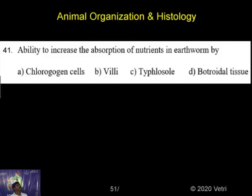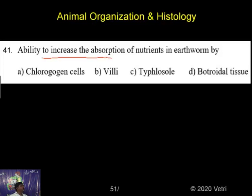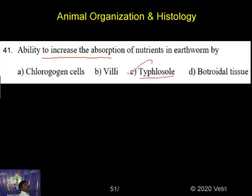Ability to increase the absorption of nutrition into the epithelium. Collagen cells are absorbed, or villi cells, typicosol, and posterior tissue. It's a very easy question: who is the absorber of the nutrition? It is the typicosol. Typicosol absorbs the nutrition of the epithelium.